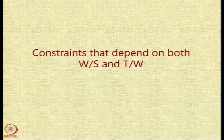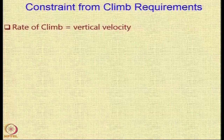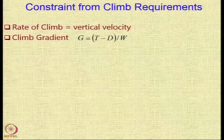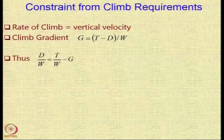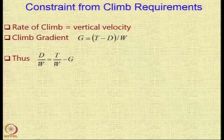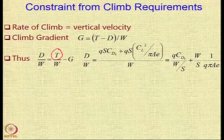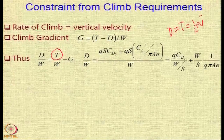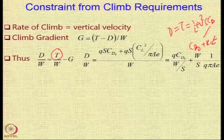The third category of constraints affects both W/S and T/W directly. The climb requirement is one such example. The rate of climb dh/dt is the vertical velocity, and the climb gradient is defined as the specific excess thrust (T − D)/W. From this, D/W equals T/W minus G, and D equals half rho V² S C_D, where C_D is broken into C_D0 and K·CL².